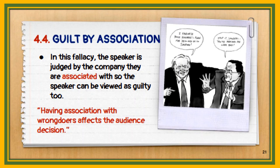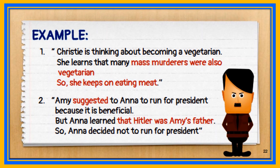The last subtype of ad hominem is guilt by association. In this fallacy, the speaker is judged by the company they are associated with, so the speaker can be viewed as guilty too. For example, Christy is thinking about becoming a vegetarian but learns that many mass murderers were also vegetarian — so she keeps eating meat. Also, Anna was suggested to run for president, but learned that Hitler was the suggester's father, so she decided not to run.